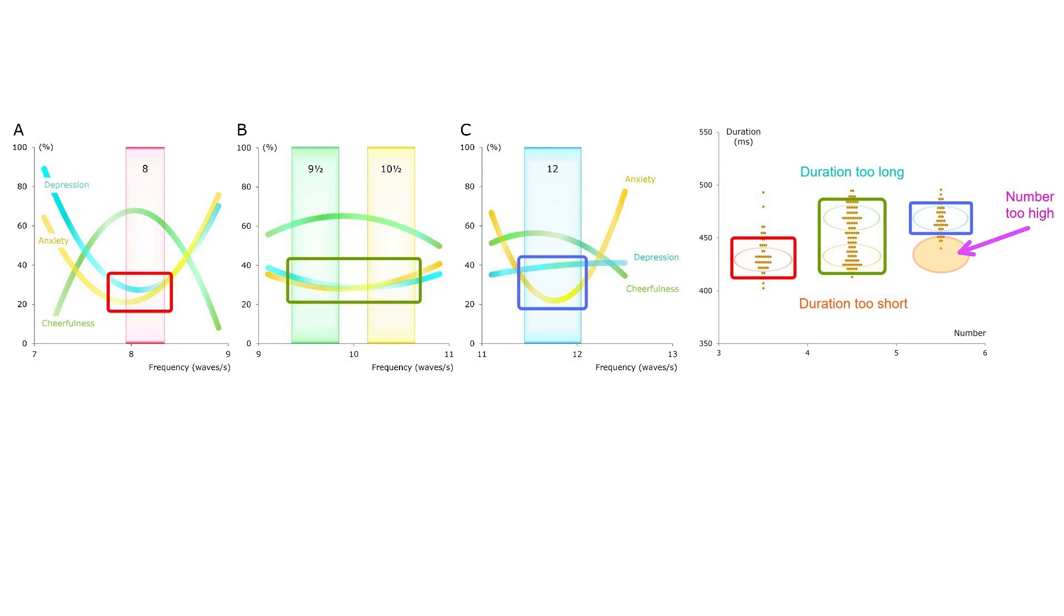Here the number is too high for a short duration. But you could just as well say the duration is too short for this number. When it comes to treatment, what is best? A medication that reduces the number, or one that prolongs the duration?